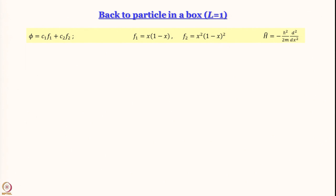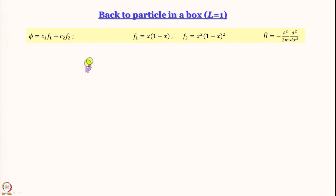We have set L equal to 1, so there is an L-squared in the denominator for energy that has been set to 1. If you want the absolute value just bring that L-squared back in the appropriate position. The functions must be symmetric with respect to the midpoint and must vanish at the boundaries. Both x(1−x) and x²(1−x)² satisfy these conditions.